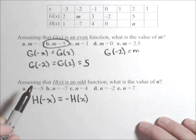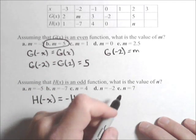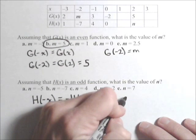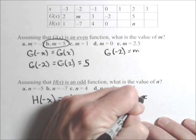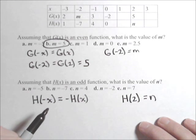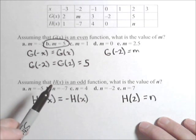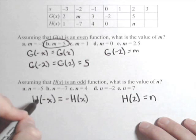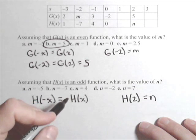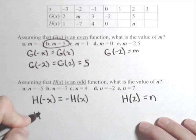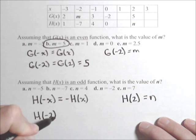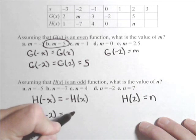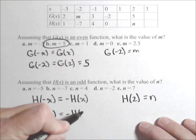These are important definitions. We want the value of n, which is h of two. Okay, so let's see what we can figure out. Well, let's apply this definition. We know that h of negative two is equal to negative h of two.